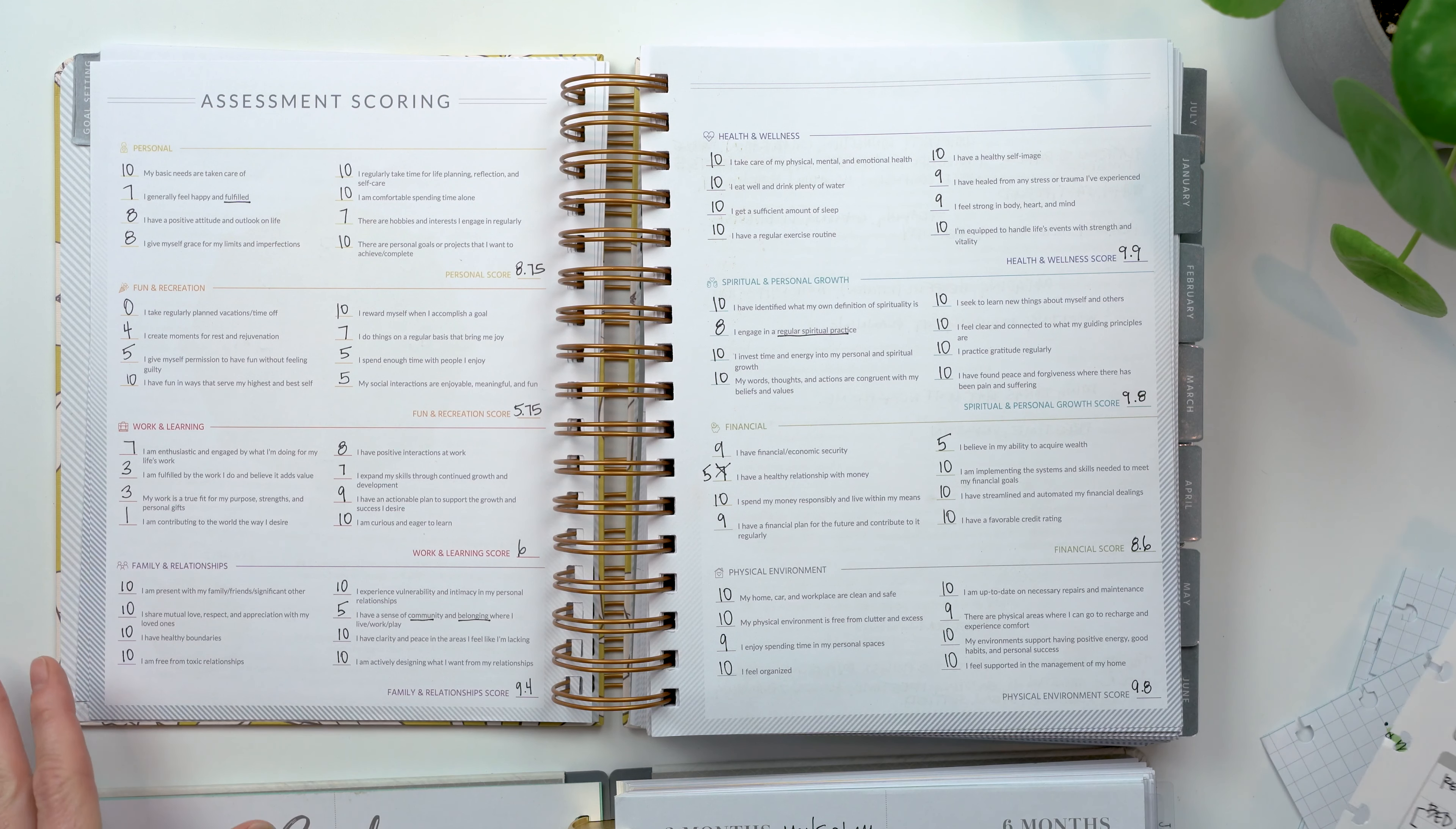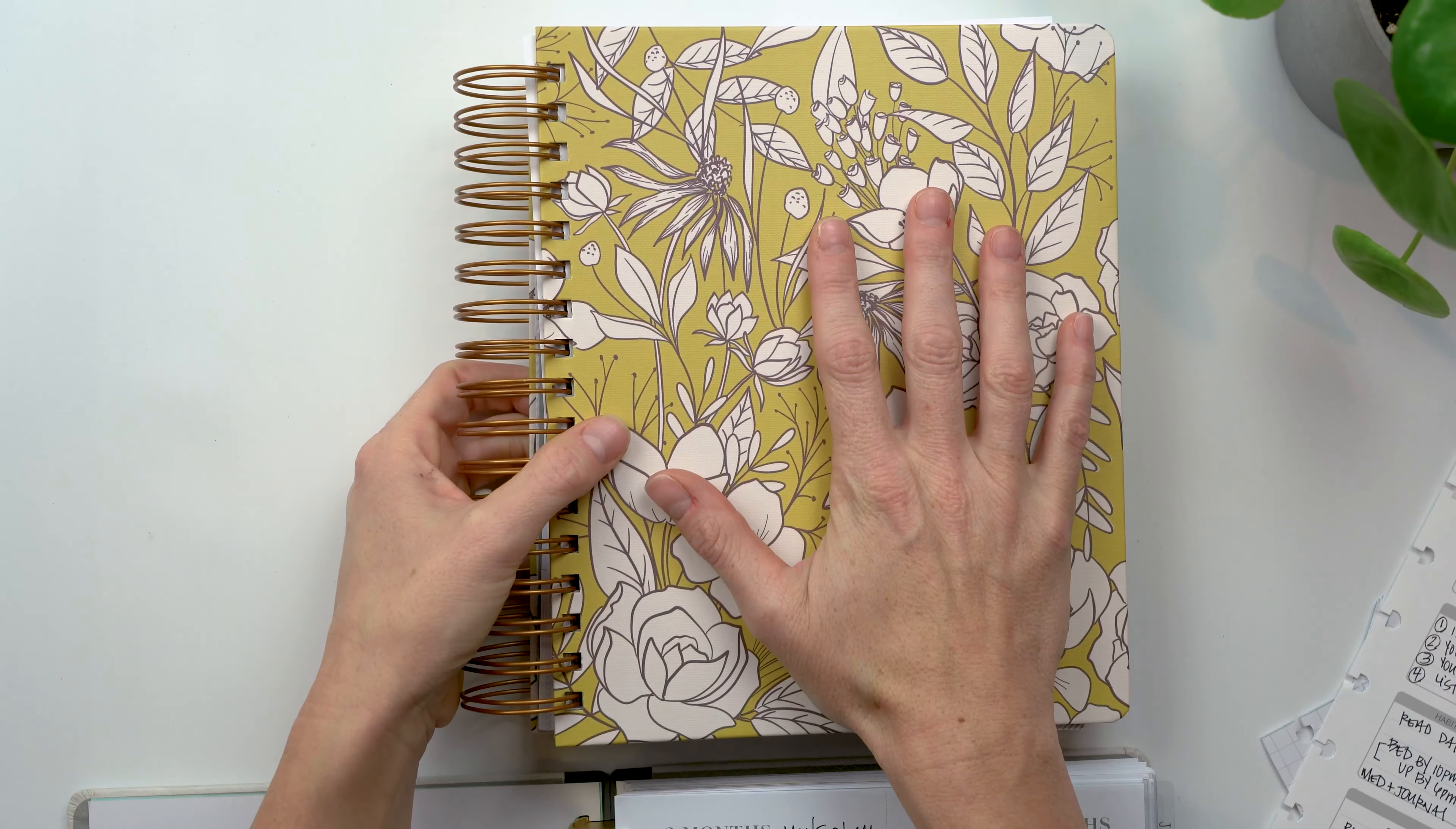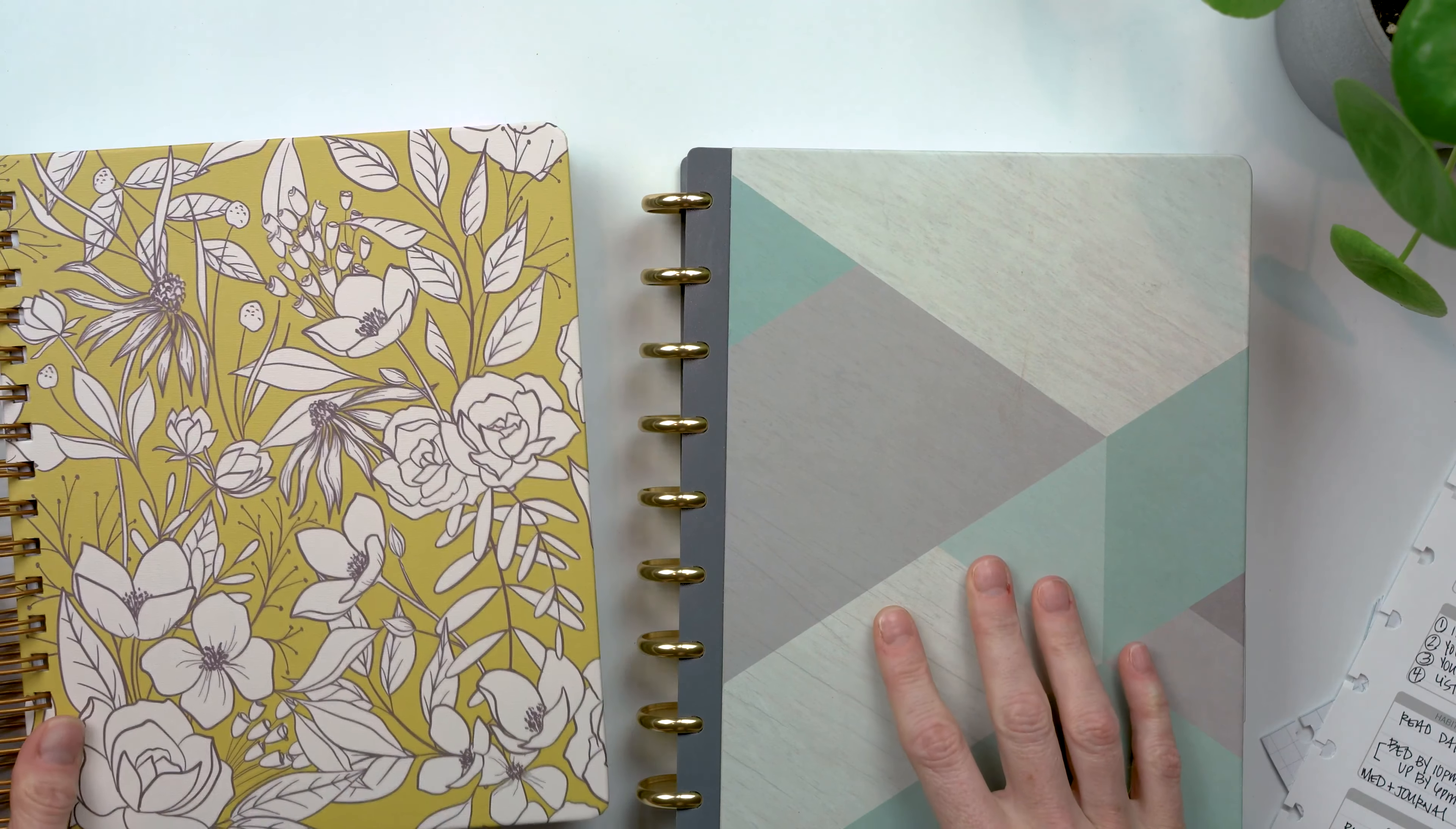So those are what I think are the pros. I wouldn't even call this pros and cons. The differences between the Moxie life weekly planner, that's also a built in goal planner and the Inkwell press weekly planner. Okay.